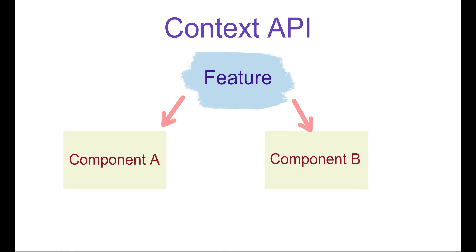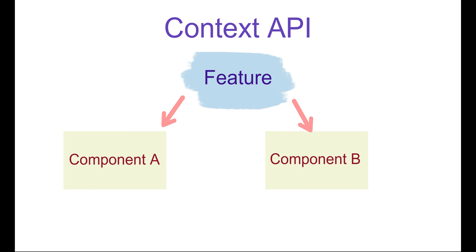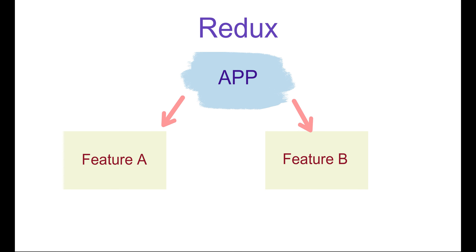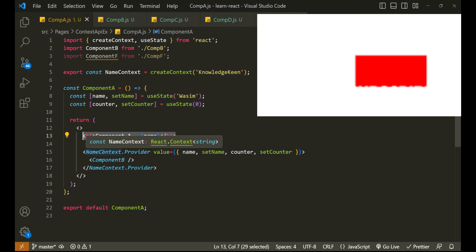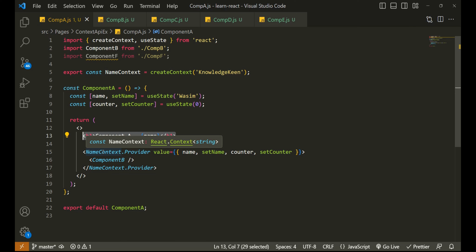My approach for context API: if you have a feature-level need — say an application has 10 different features — create a context for each feature. It will be easier to handle feature-level state management. Redux is for big major applications where it handles state management more easily. I hope you got the gist of what exactly Context API is. If you liked this video, please subscribe, click the bell icon for notifications, give a thumbs up, and put your comments — I love to read them. Thank you so much guys!